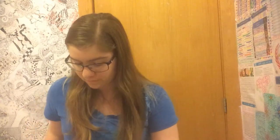Endocytosis is the process by which a cell brings in materials too big to bring in by diffusion. Pinocytosis is a type of endocytosis where the cell makes an indentation in its membrane to bring substances in. Phagocytosis is a type of endocytosis where a cell engulfs a substance by forming extensions called pseudopods. Exocytosis is a process by which a cell releases substances using energy — used when materials are too big to release by diffusion or to get rid of waste against the concentration gradient.